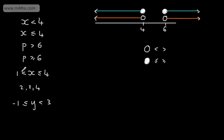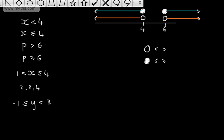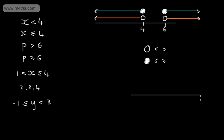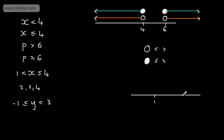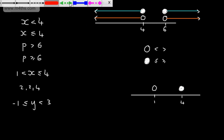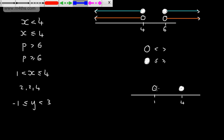For the compound inequality x is strictly greater than 1 and less than or equal to 4, I'm going to draw a new number line with two dots — one at 1 and one at 4. We need an open dot at 1, a closed dot at 4, and we simply represent the inequality by drawing a line between the two dots. This shows that x is strictly greater than 1 yet in turn less than or equal to 4.